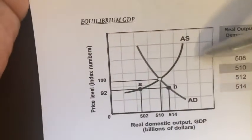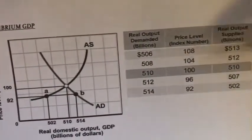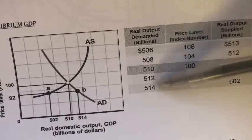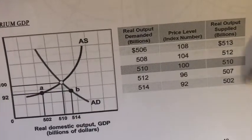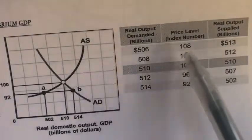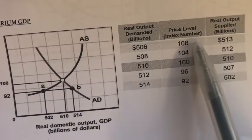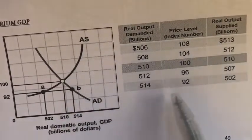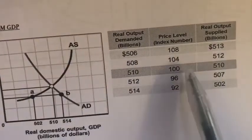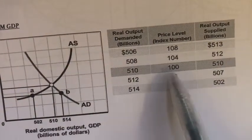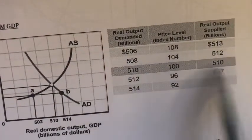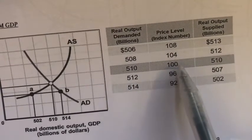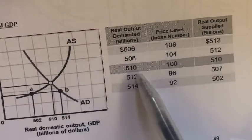So here, as you can see, there's a table that shows a list of all of the aggregate demand or real output demanded, as well as aggregate supply or real output supplied. Here are the list of price levels that corresponds to each of these aggregate demand and aggregate supply. As you can see, there will be one point at which both the aggregate demand and aggregate supply are equal — this is our equilibrium price level, and these are our equilibrium GDP levels.